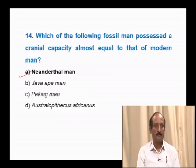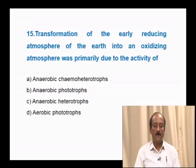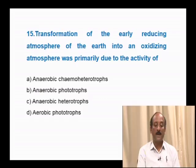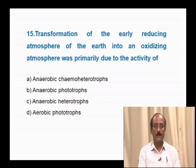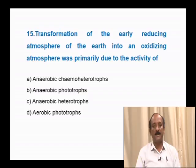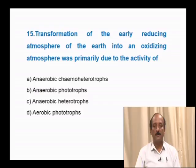Question number 15: Transformation of the early reducing atmosphere of the Earth into an oxidizing atmosphere was primarily due to the activity of — anaerobic chemoautotrophs, anaerobic phototrophs, anaerobic heterotrophs, aerobic phototrophs. The earlier atmosphere was reducing due to the lack of molecular oxygen. The present atmosphere is oxidizing due to molecular oxygen released by aerobic phototrophs during photosynthesis. The correct answer is aerobic phototrophs.